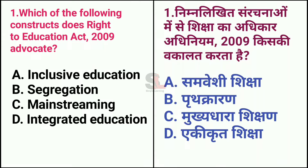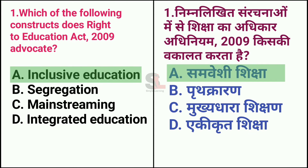Question No. 1. Which of the following constructs does the Right to Education Act 2009 advocate? Option A: Inclusive Education. Option B: Segregation. Option C: Mainstreaming. Option D: Integrated Education. The answer is Inclusive Education.